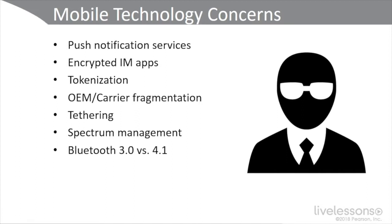We also have the Bluetooth 3.0 versus 4.1 issue. CompTIA wants us to know the difference between 3.0 and 4.1, even though Bluetooth 5.0 has been introduced. Basically, 3.0 is high speed — faster than 2.0 — and a lot of wireless headphones use it. Smartphones can adjust to operate at minimum power levels if necessary. Bluetooth 4.1 is what's called Bluetooth Low Energy, so those Bluetooth headphones will last longer. It allows smart devices and smart components to be connected for longer periods of time without draining batteries. Also, older versions of Bluetooth would interfere with 4G LTE, but 4.1 doesn't do that.